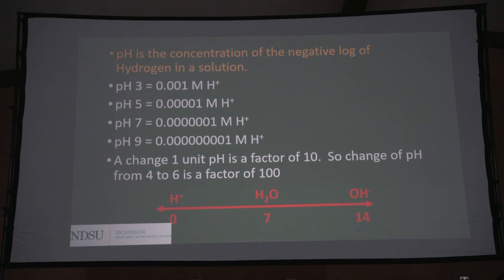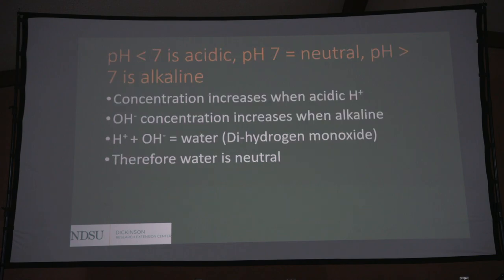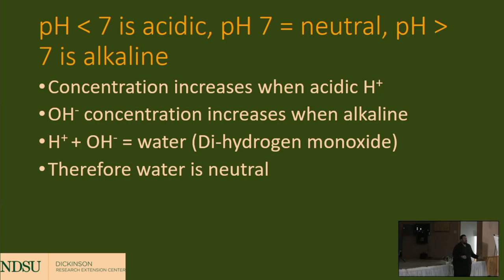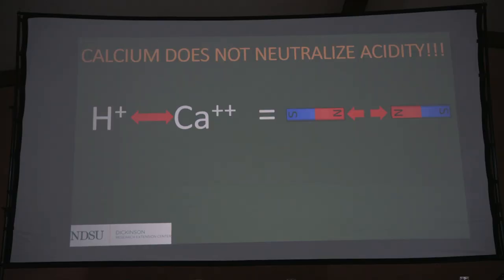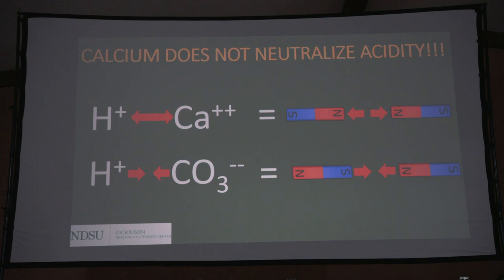pH is an inverse scale — when acidity increases, pH is decreasing. pH less than 7 is acidic, 7 is neutral, greater than 7 is alkaline. We don't get too excited about pH management until that pH is less than 5.5. Calcium does not influence pH. Because hydrogen causes acidity, calcium has a plus-2 charge — like sticking two positive magnets together, they repel. But carbonate, a big component of lime (CO₃), has a negative charge, so it can react with hydrogen.